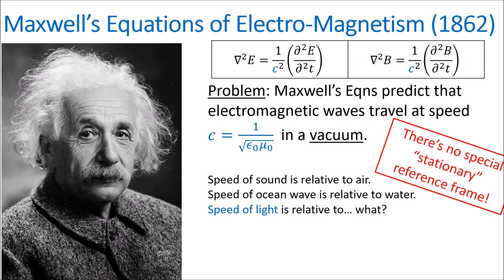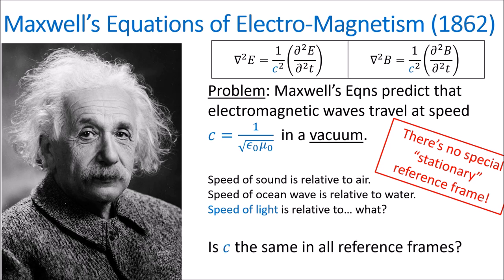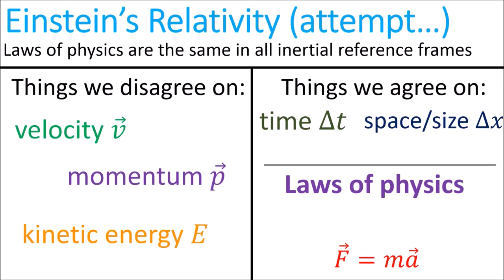This is where Einstein comes in. Einstein proposed that the speed of light c was the same in all reference frames. In an attempt to build a new theory of relativity, Einstein began by agreeing with Galileo and said that the laws of motion should be the same in all inertial frames of reference. But he expanded this principle to include not just Newton's laws of motion, but all laws of physics, including Maxwell's equations, and he made the speed of light c a law of physics that is agreed upon in all inertial frames.